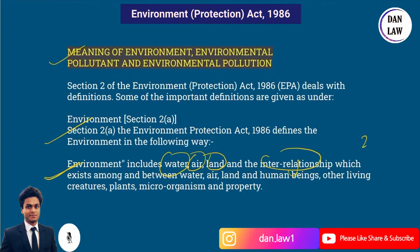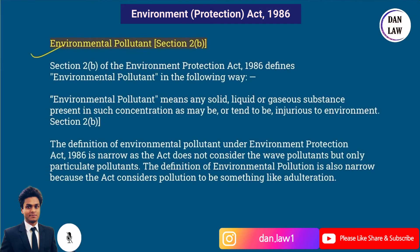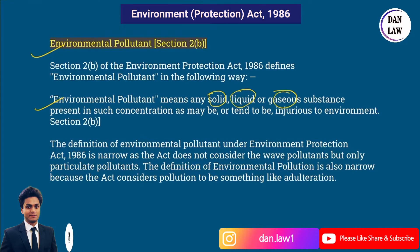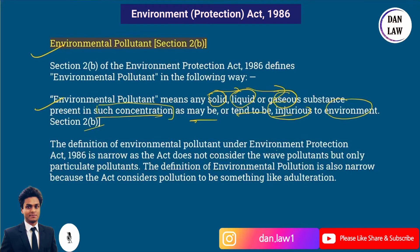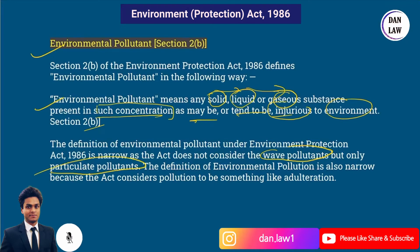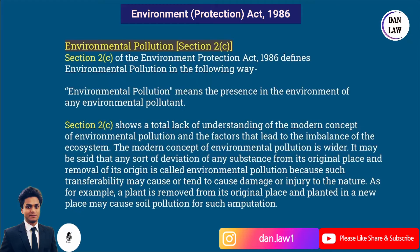Under Section 2(b), 'environmental pollutant' is defined as any solid, liquid, or gaseous substance present in such concentration as may be or tend to be injurious to the environment. The definition of environmental pollutant under the Environment Protection Act 1986 is narrow, as the Act does not consider wave pollutants but only particulate pollutants. The definition of environmental pollution is also narrow because the Act considers pollution to be something like adulteration.